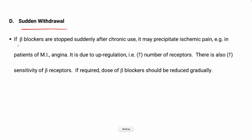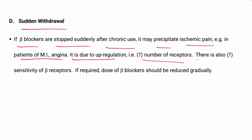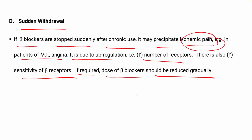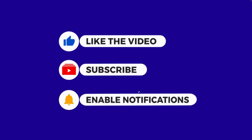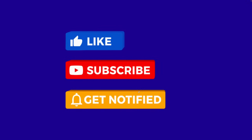Next is sudden withdrawal. If beta blockers are stopped suddenly after chronic use, it may precipitate ischemic pain, for example in patients with MI or angina. This is due to upregulation: the number of receptors increases, so the sensitivity of beta receptors is increased. If gradual withdrawal is required, the dose of beta blockers should be reduced step by step, as sudden withdrawal may precipitate symptoms.